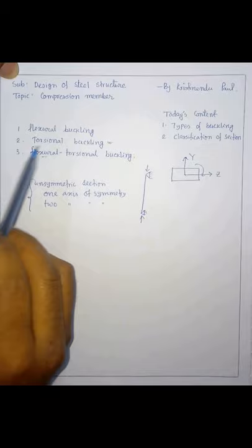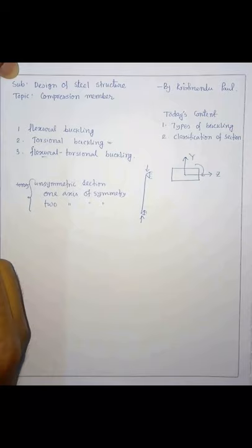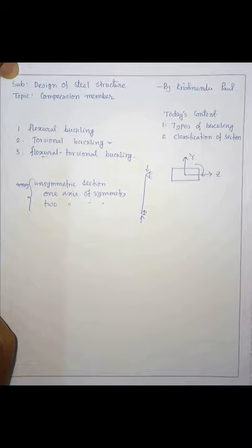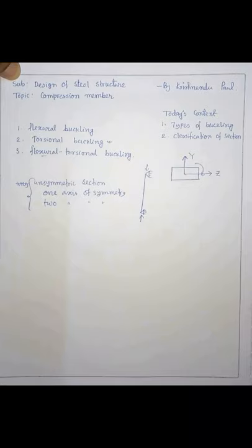Buckling which occurs due to flexure only is called flexural buckling. Torsional buckling means the member will bend from its initial axis due to torsion — there will be twisting in the axis. The third case, flexural torsional buckling, comprises both: the member shows flexural as well as torsional buckling. A compression member may show any of these three behaviors.